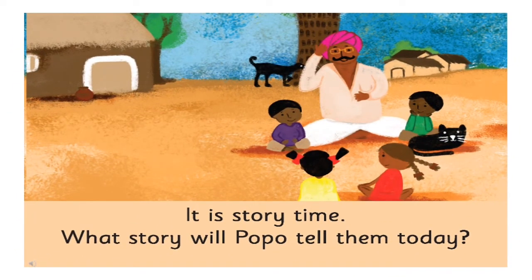The sun sets in the evening and that is why children are running towards a huge neem tree. Now you can see children are sitting under a huge neem tree. Can you tell me what is the name of this man? The name of this man is Popo. And what do the children want him to do? Yes, children want him to narrate a story.